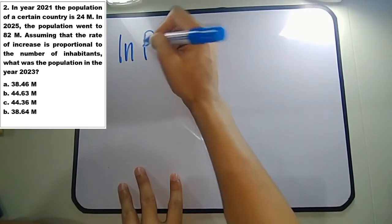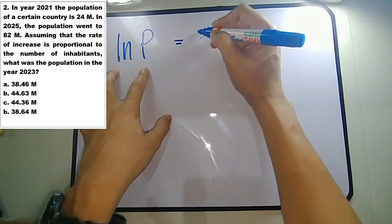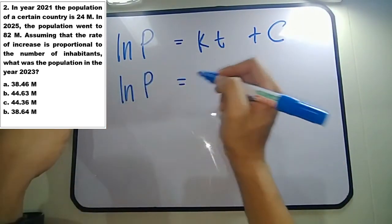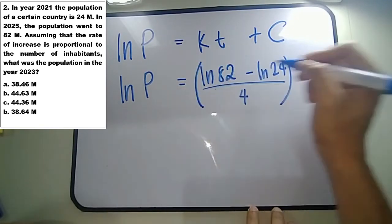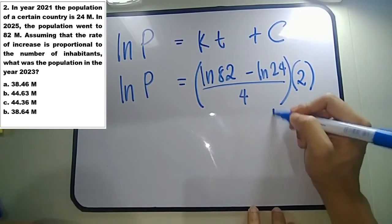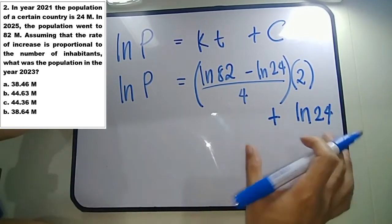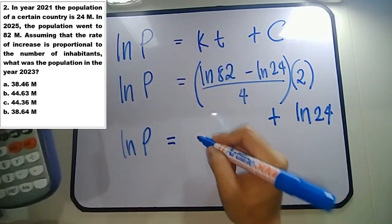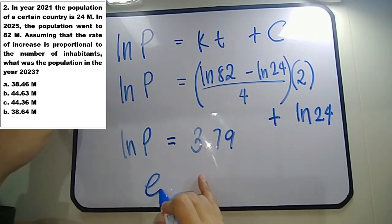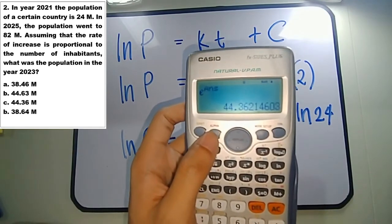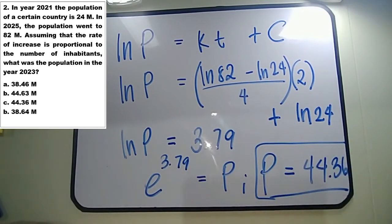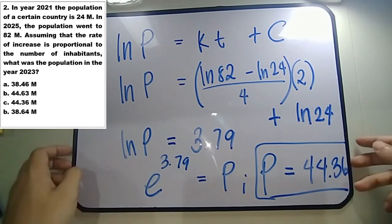To find the population at time 2 years, we substitute into ln(p) equals kt plus c: ln(p) equals [(ln82 minus ln24) over 4] times 2 plus ln(24). Simplifying, ln(p) equals approximately 3.79. Converting to exponential form, p equals e raised to 3.79, which gives p equals approximately 44.36 million. So in year 2023, which is 2 years after 2021, the population is approximately 44.36 million.